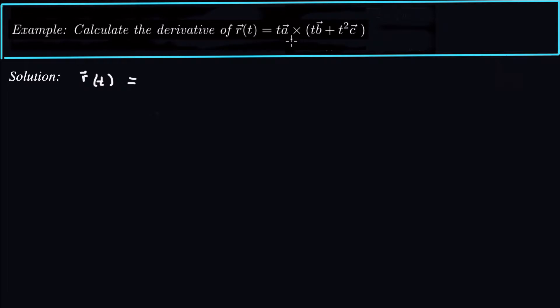First of all, notice that vector cross products can distribute over vector addition. So that's something we talk about when we introduce vectors and cross products, is that vector cross products can distribute over vector addition.